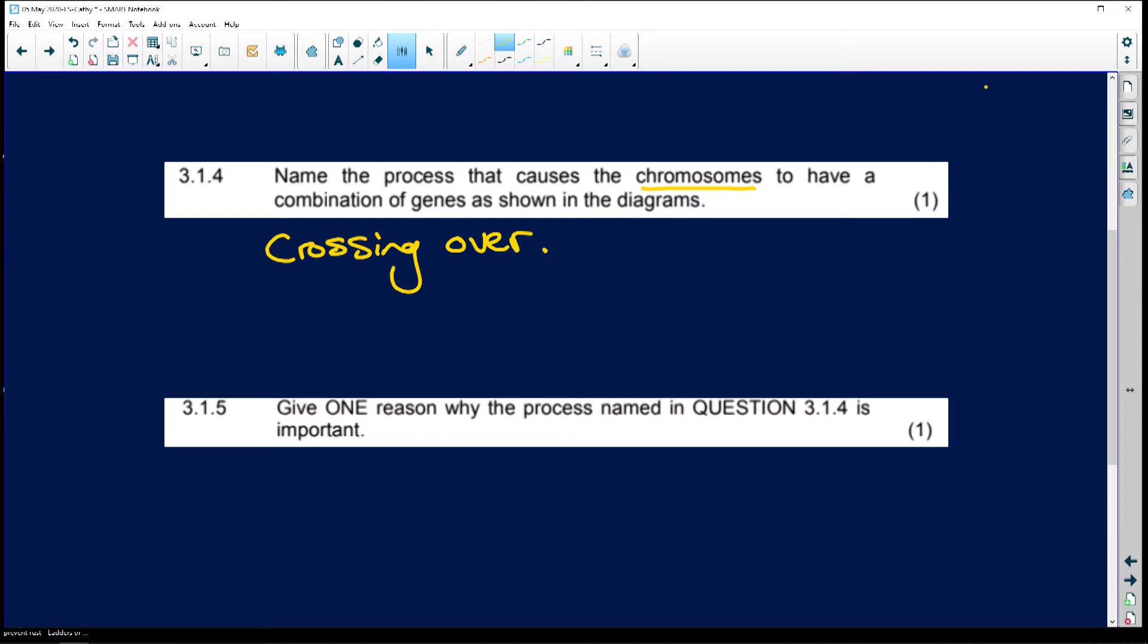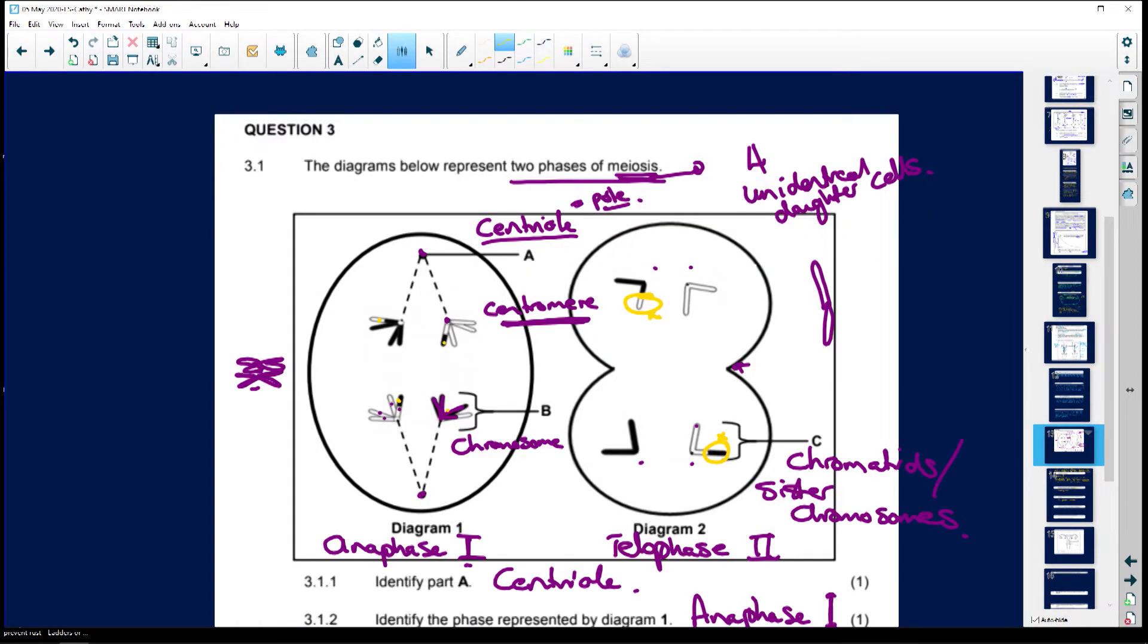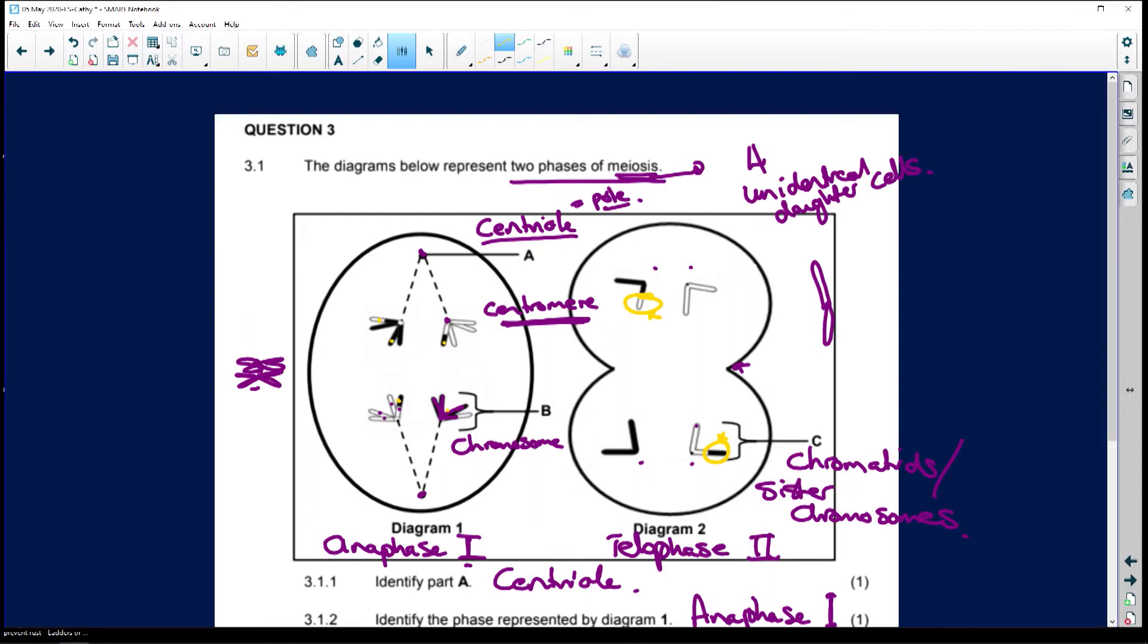Give one reason why the process named in 3.1.4 is important. Well, people, it's very easy. It is for genetic variation. Because remember, when crossing over occurs, you've got the pieces of genetic material from the maternal chromosome plus the paternal chromosome. Those two make up your homologous chromosomes. Homologous means that they carry the same alleles in the same locus on those chromosomes.